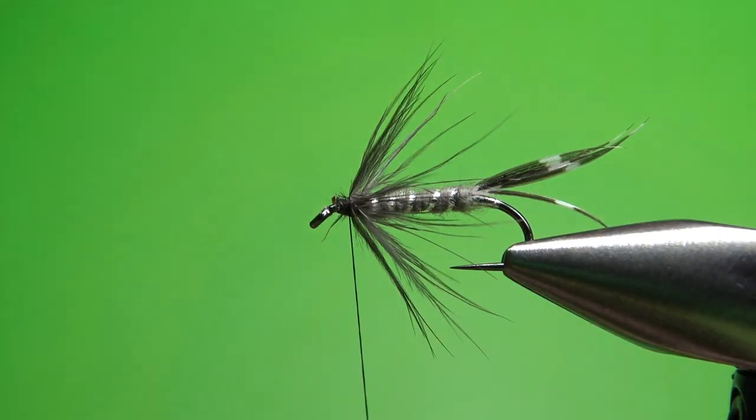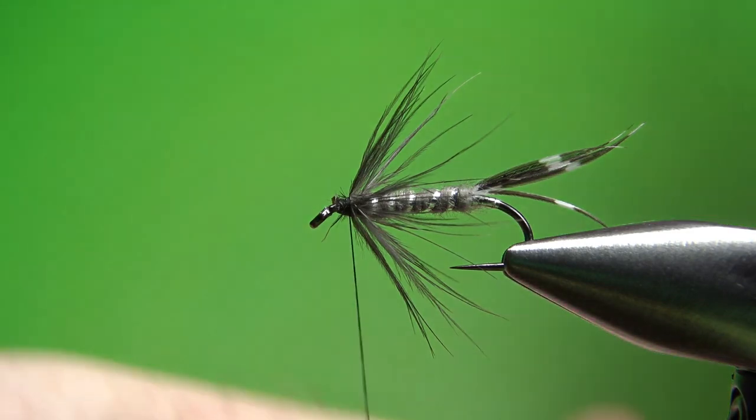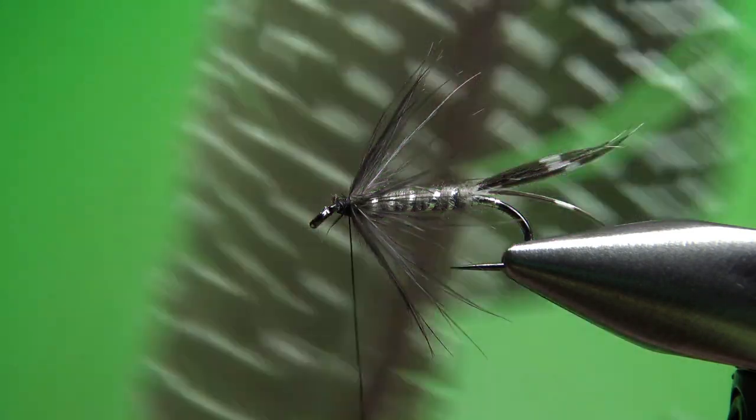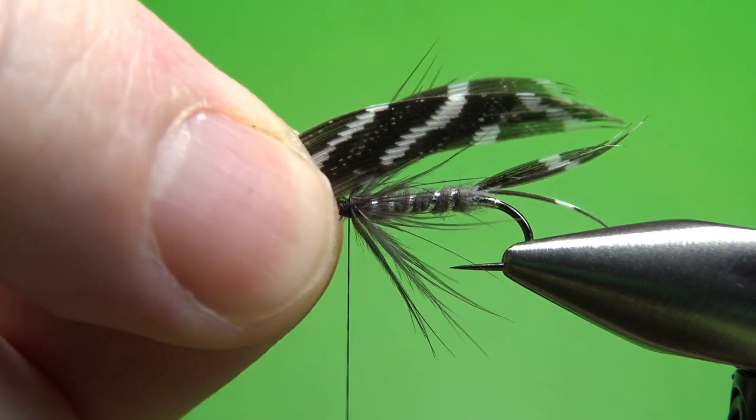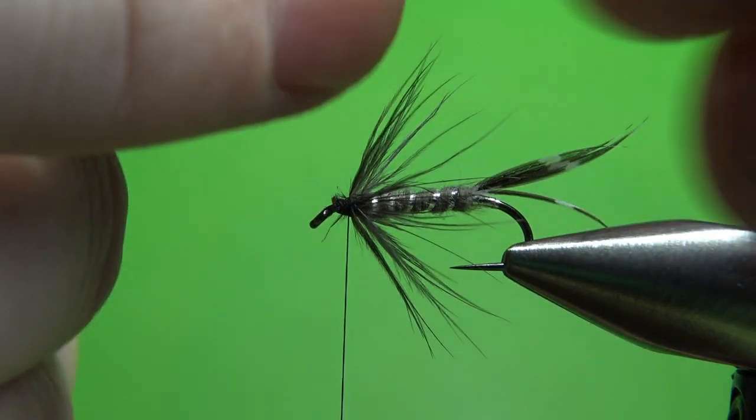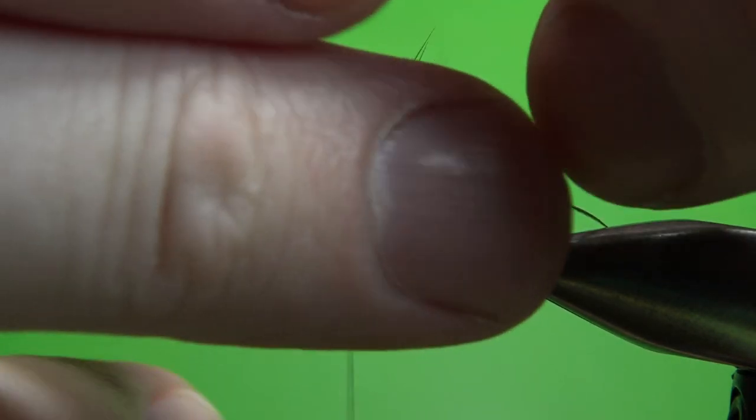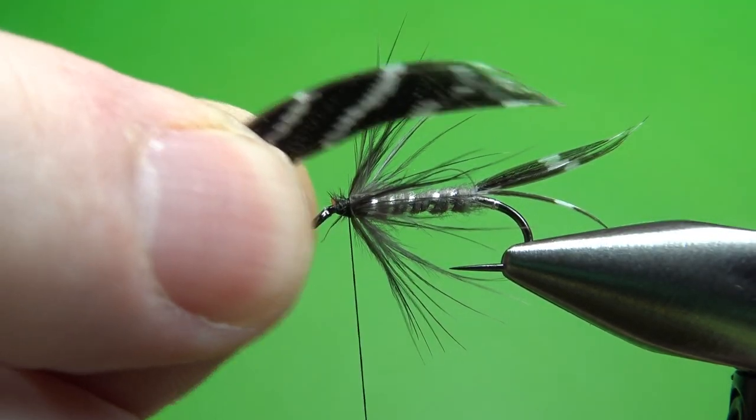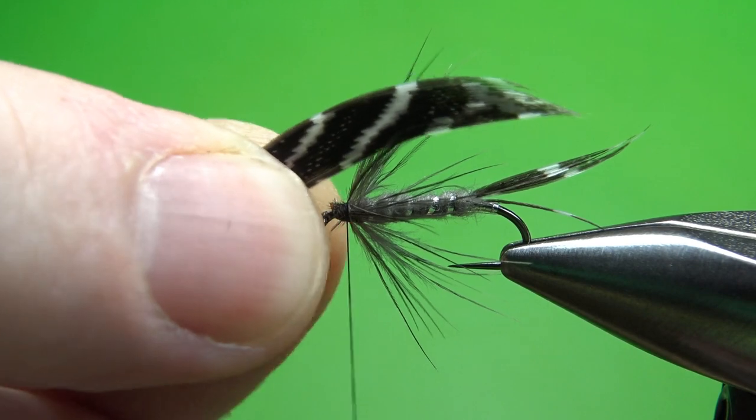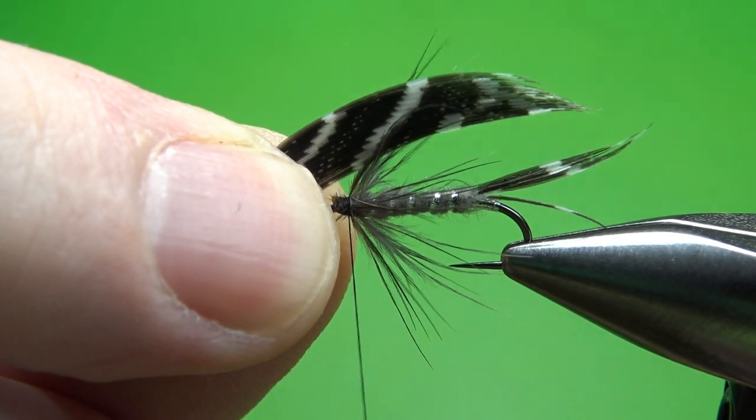But what really makes this fly cool, take a couple slips from your guinea feather. Natural guinea looks best gray. Take slips from your left and right. Right here, I've got them back to back. Just get them lined up a little better. Try to keep the tips lined up if you can.